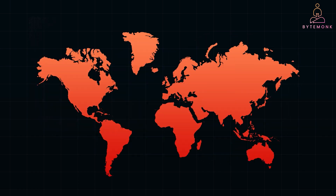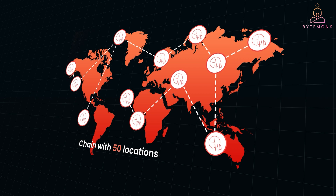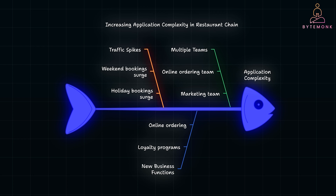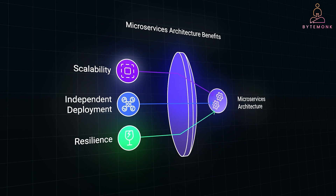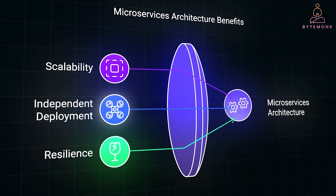Now let's consider what happens as the application grows. Suppose the restaurant expands into a chain with 50 locations across the country, and each location now needs separate reservation management, kitchen inventory tracking, and customer profiles. More customers are booking tables, especially during busy times like weekends and holidays, creating expected traffic spikes. The chain might also want to add a loyalty program, online ordering, or real-time notifications of table availability. In this scenario, shifting to a microservices architecture would make sense. Each service — reservation, ordering, and customer profiles — can be scaled independently based on demand. If the reservation system is heavily used during the weekend, you can scale just that part without affecting other areas. Teams can update or release new features for a specific microservice without redeploying the entire application.